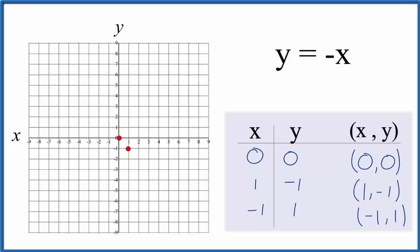Some people only graph two points. I like to graph three in case I made a mistake, and I'll usually catch it. So x is negative one and y is positive one. And there we see they're all in a line.